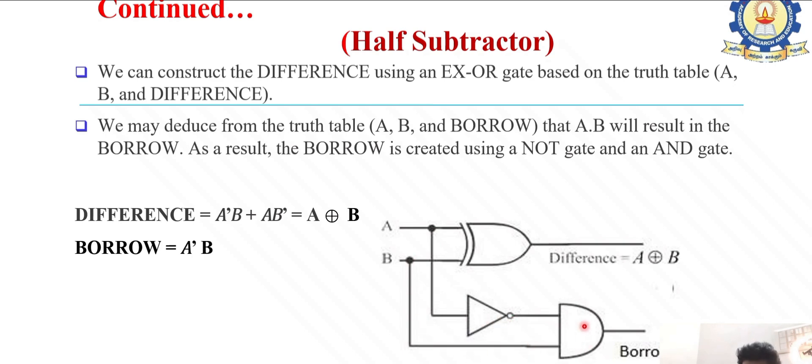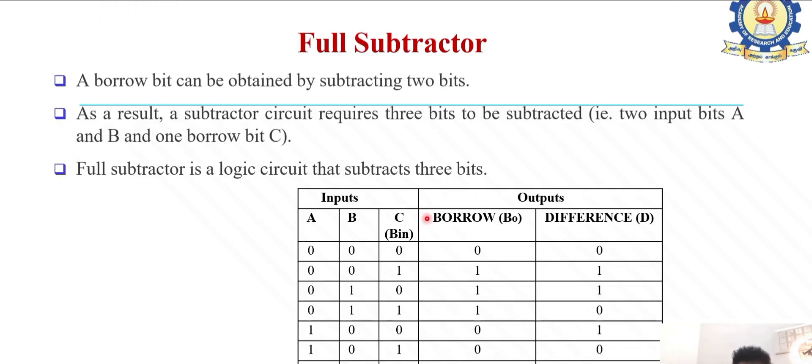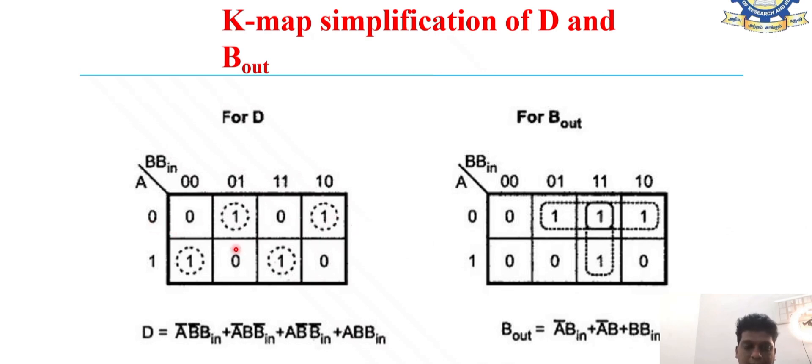Full subtractor uses three variables. For subtraction, 0 0 0 gives difference 0 and borrow 0. 0 minus 1 gives difference 1 and borrow 1. Similarly for other combinations. Here, 0 minus 1 is 1 and 1, and when we borrow, the difference becomes 0 and borrow is only 1 here.